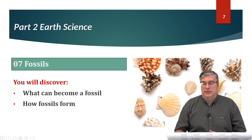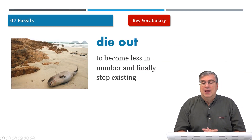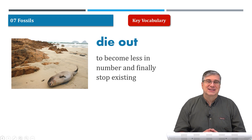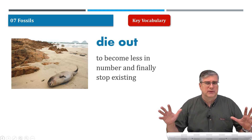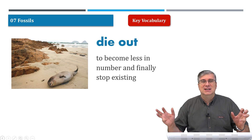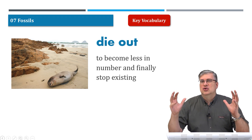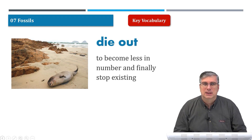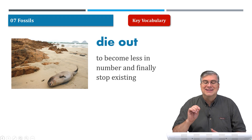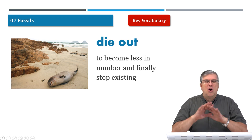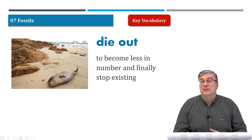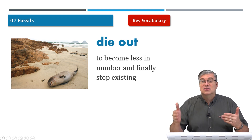Let's begin with the vocabulary. The first word or phrase is 'die out.' That's a sad word — it means something stops living. But when you talk about a whole group of things, like a whole species, they all die at the same time. 'Die out' means to become less in number and finally stop existing. Did you know that more than 90% of all living species that lived on earth have died out in history?